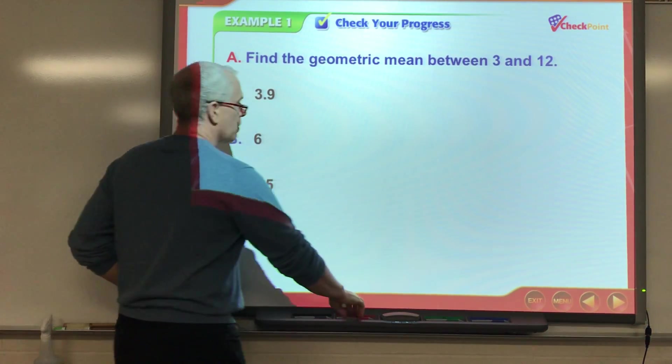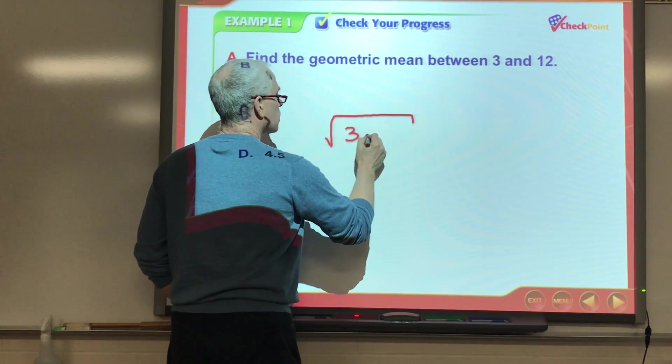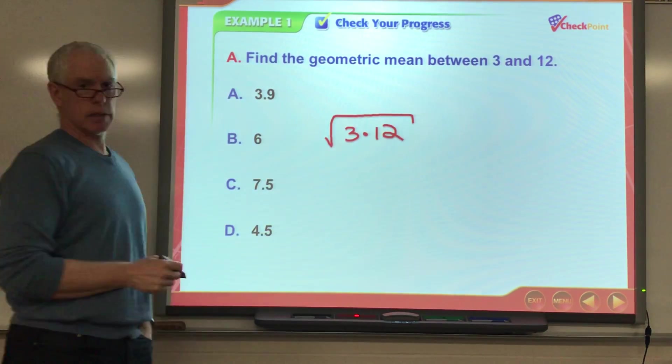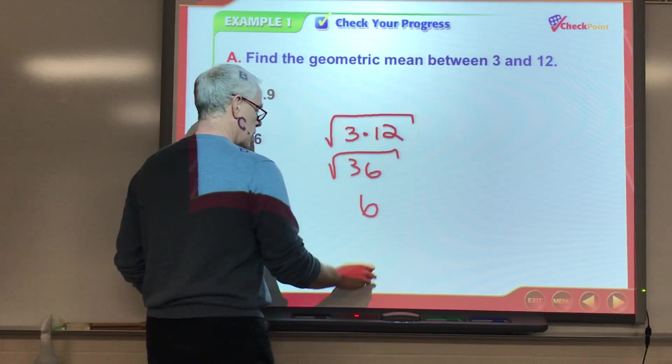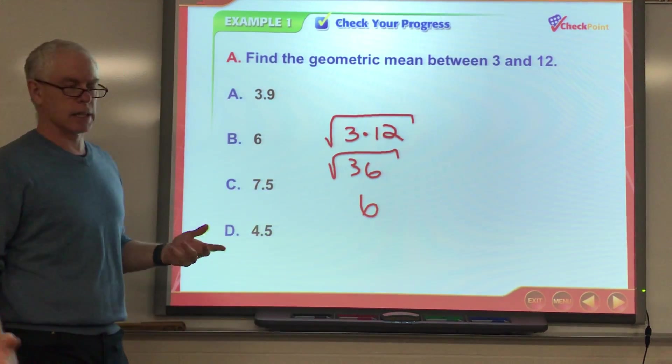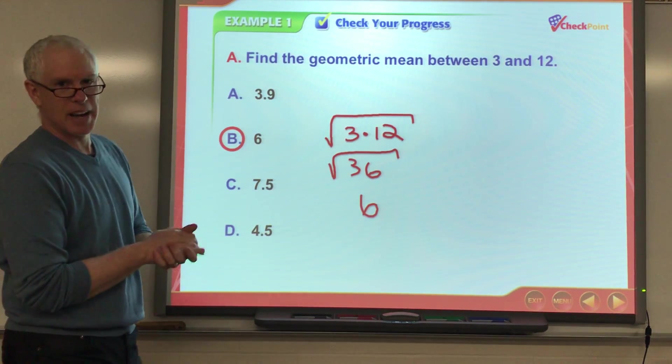Okay, we said the geometric mean was going to be the square root of the product. So 3 times 12 is 36, and the square root of 36 is 6, so there you go. Okay, you got 6, give yourself a pat on the back.